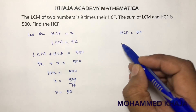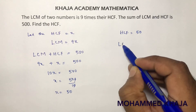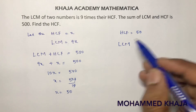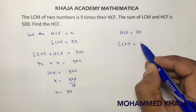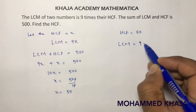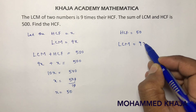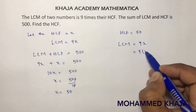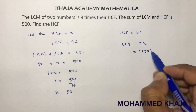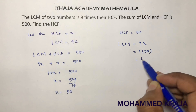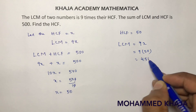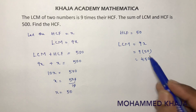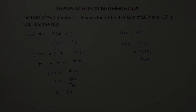Suppose if they ask for LCM, you can calculate that too. If they ask, LCM is 9 times x, that is 9 times 50, which equals 450. So LCM is 450 and HCF is 50.